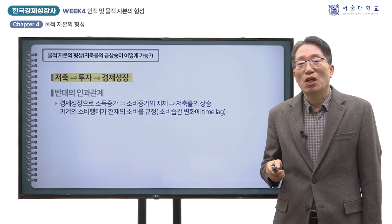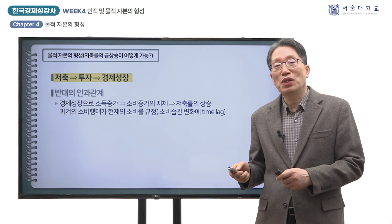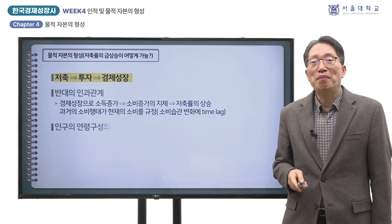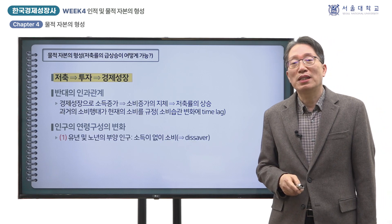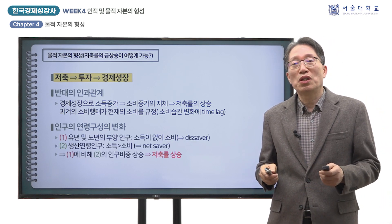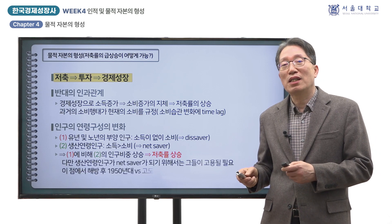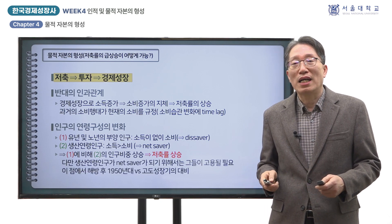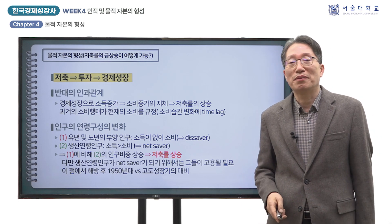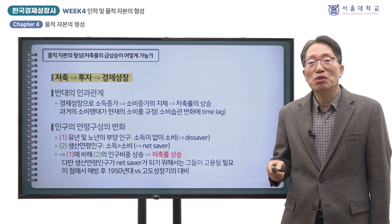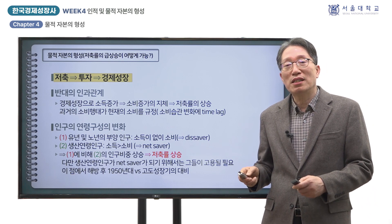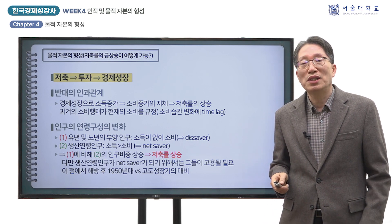한국의 저축률이 고도성장기에 급상승한 요인의 하나를 여기에서 찾을 수 있습니다. 앞에서 인구 변천을 살펴보았을 때, 고도성장기의 유년이나 노년 인구에 비해 생산연령 인구가 크게 늘어났고, 그로 인해 총 부양비가 급속히 떨어졌음을 지적한 바 있습니다. 이러한 인구 구성의 변화가 저축률의 이례적인 상승을 가져온 중요한 요인이라고 생각합니다.